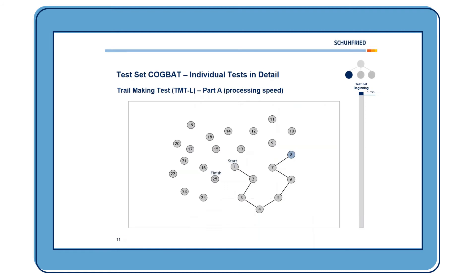The test set starts with a classic paradigm: the Trail Making Test part A, where the instruction is to connect the dots ranging from 1 to 25. So first you click on 1, then 2, then 3, then 4 and so on. Depending on how fast you react, your processing speed score will be higher or lower.